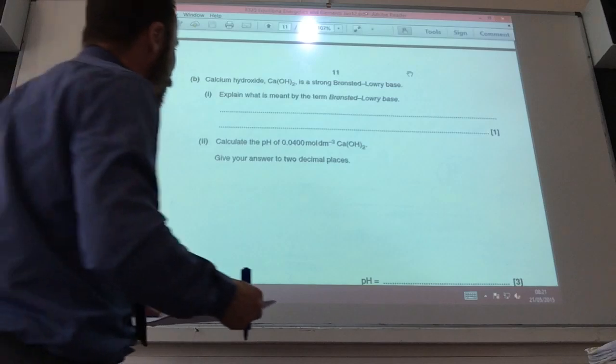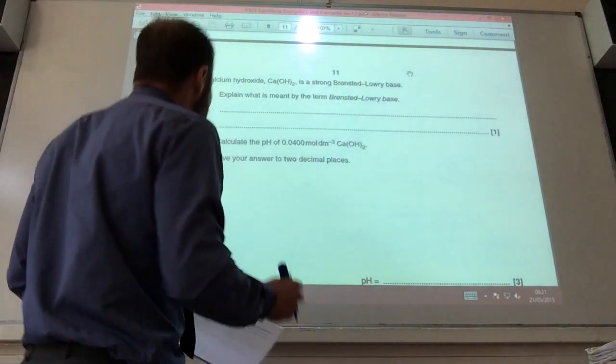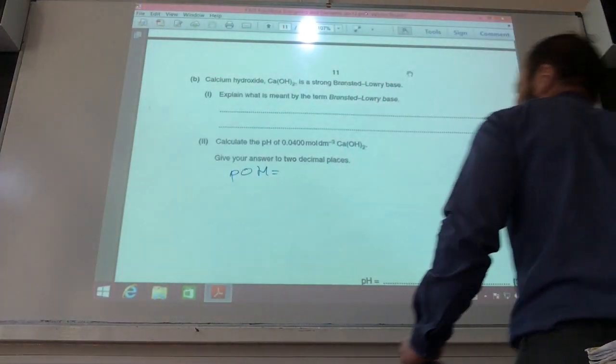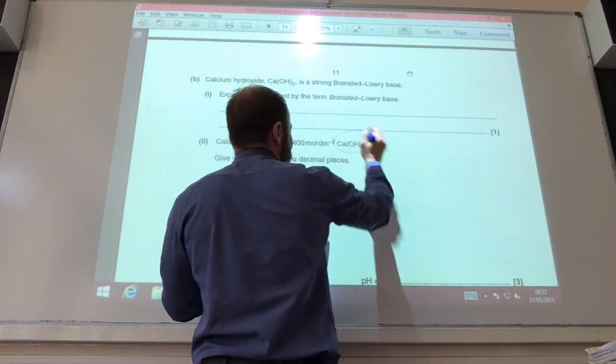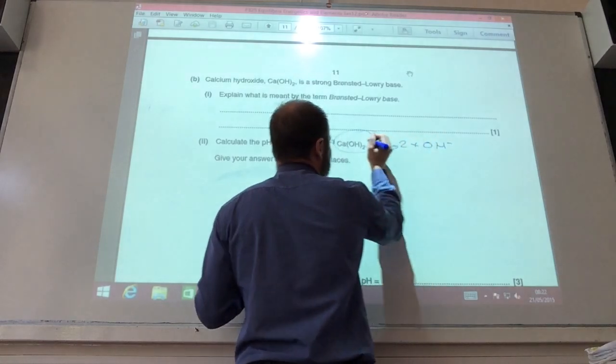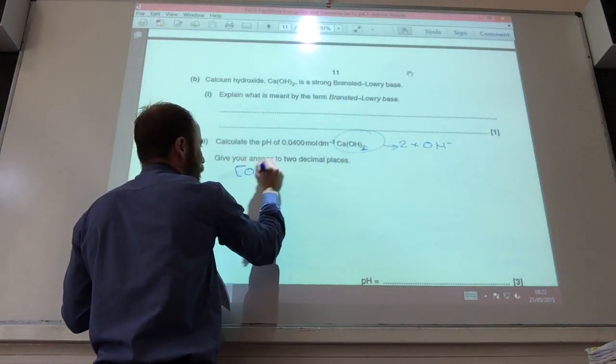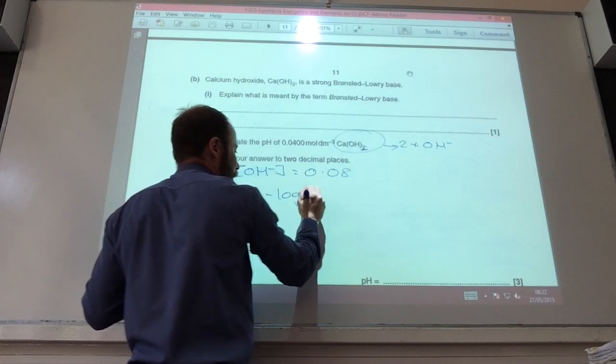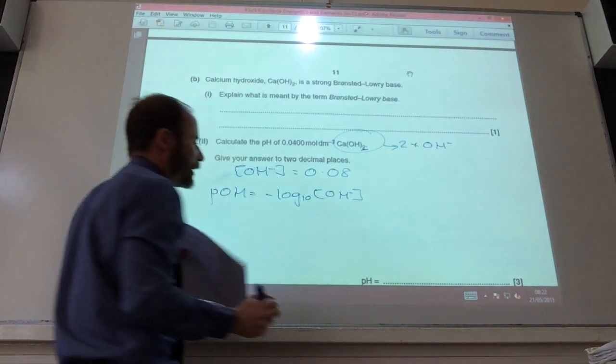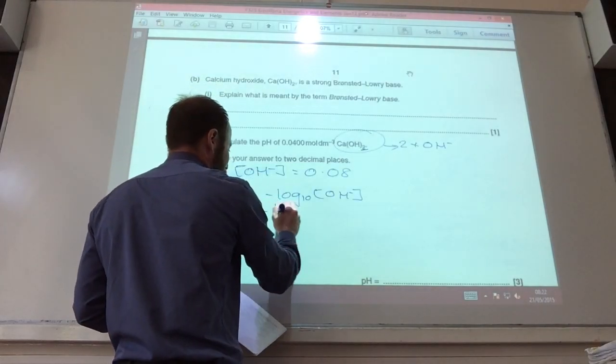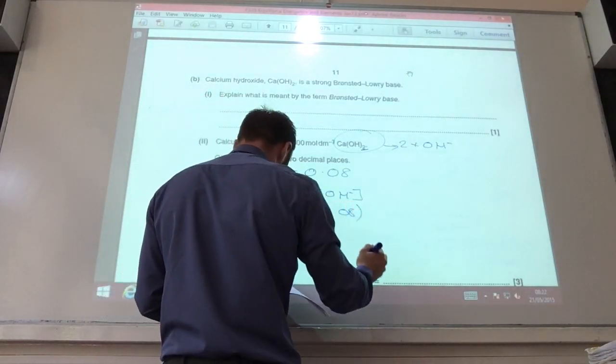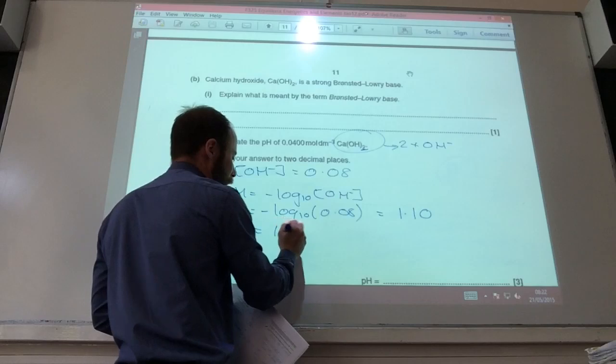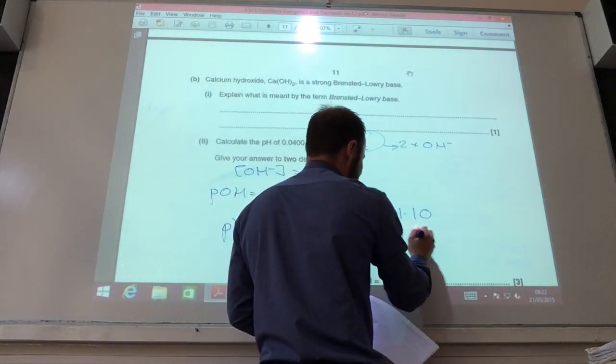Calculate the pH of calcium hydroxide solution. The easiest way I think to do this is to work out your pOH. But hang on a minute. If you notice, for every one calcium hydroxide, I get two OH minus ions from that. So the concentration of OH minus is actually going to be 0.08 moles per decimeter cubed. If you then work out your pOH, which is minus log to the base 10 of the concentration of OH, minus log to the base 10 of 0.08, that comes to 1.10. And then your pH is just equal to 14 minus 1.10, which is 12.90.